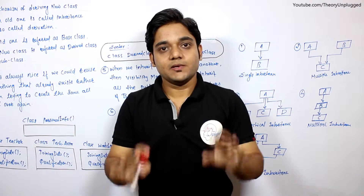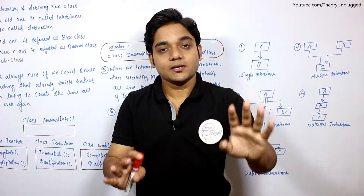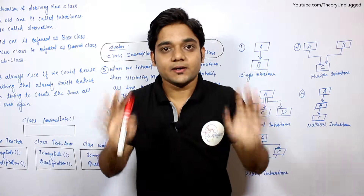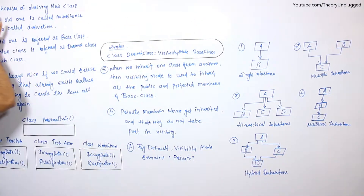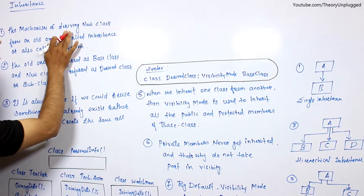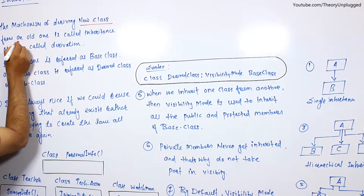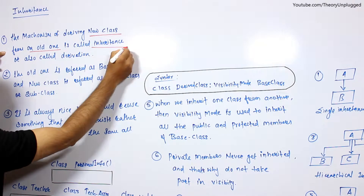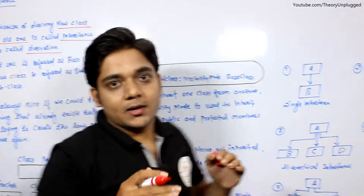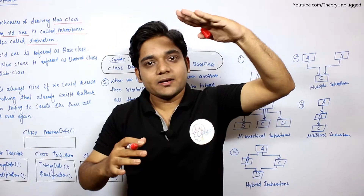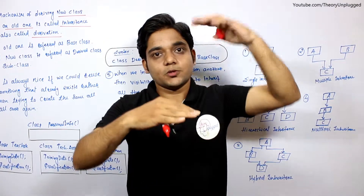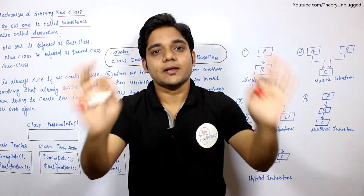In this session we will discuss inheritance, covering six points. The mechanism of deriving a new class from an old one is called inheritance, also called derivation. हमारे पास parent class है, parent class से हमने child class बनाई — so the process is called as inheritance.